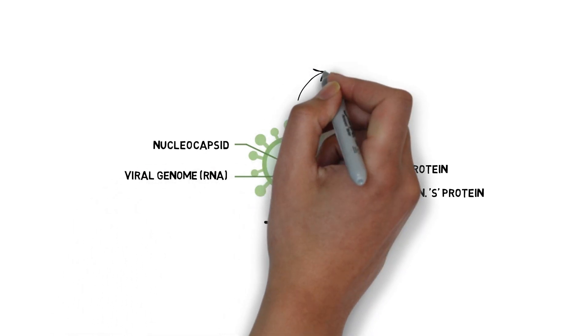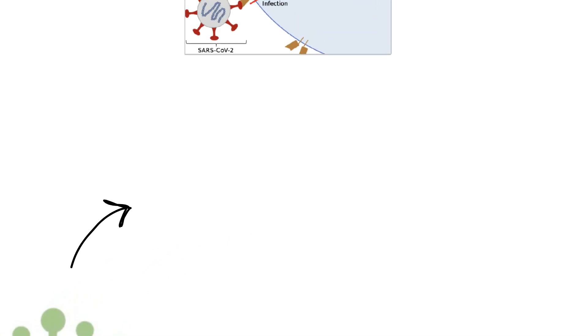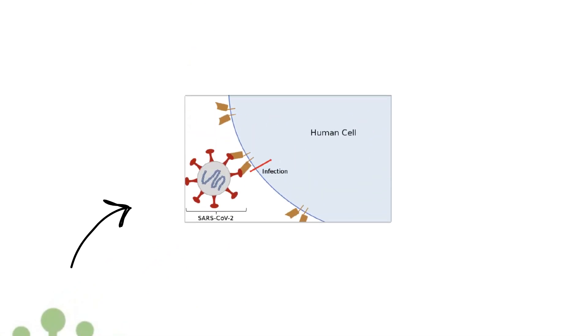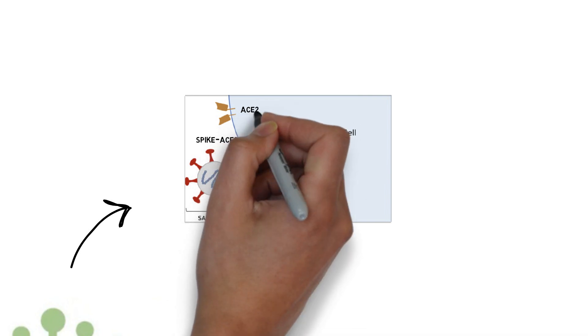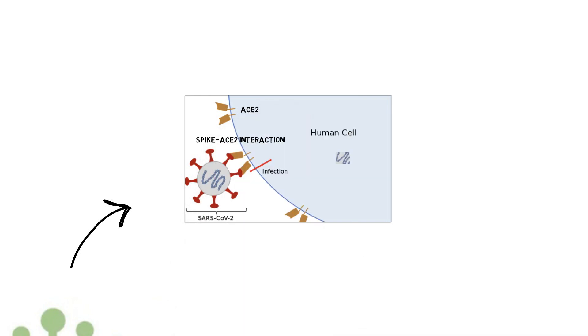This S-ACE2 binding plays a vital role in the process of virus invasion into our cells. In the interior of the viral particle we have the viral RNA, the virus's genetic material which contains instructions for making viral proteins, such as the virus's spike or S protein.